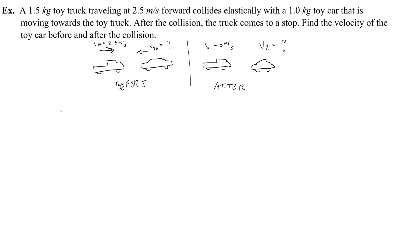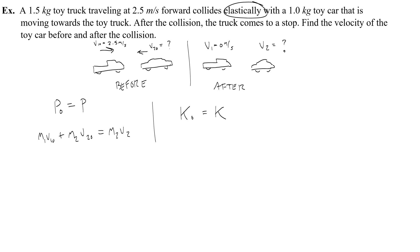This problem starts with conservation of momentum: P0 equals P. At the beginning both objects have momentum, so M1 V1 naught plus M2 V2 naught. But at the end only the car has momentum because the truck has come to a stop, so I write M2 V2. I can't solve for the initial and final velocity of the car with just one equation because both are unknown. This means I need the elastic shortcut as a second equation. On the AP test you must state K naught equals K — you get a whole point for indicating kinetic energy is conserved.